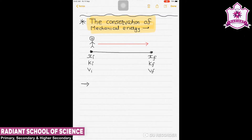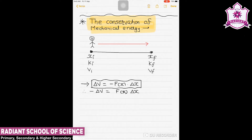We have already studied in the previous section that delta V, the change in potential energy, is equal to minus f(x) into delta x. On the basis of that we proved the work-energy theorem. If we keep the negative sign on the left-hand side, this equation becomes minus delta V equals f(x) into delta x. We consider this derived form as equation 1 and the rearranged form as equation 1a.